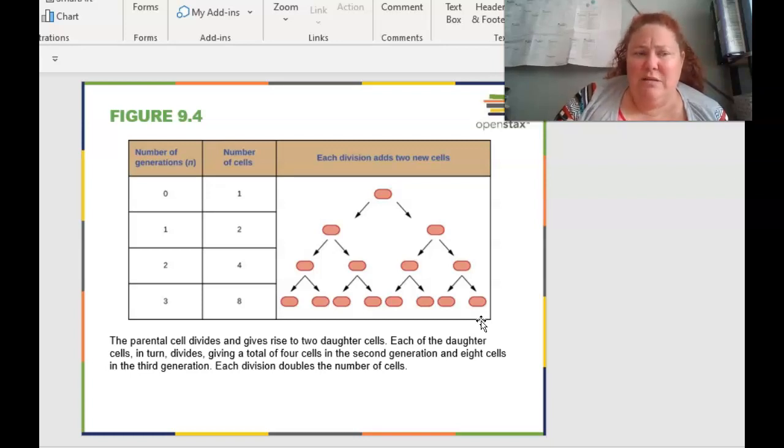They aren't going to really ask you more than like three or four generations probably. But if your brain's really smart, it's two to the nth power, n being the cycle number.